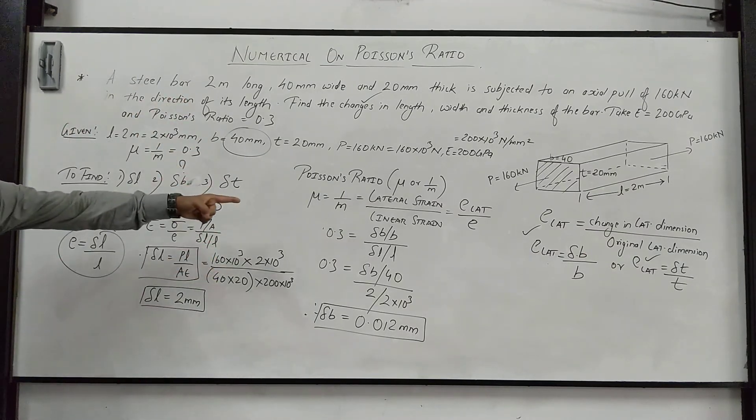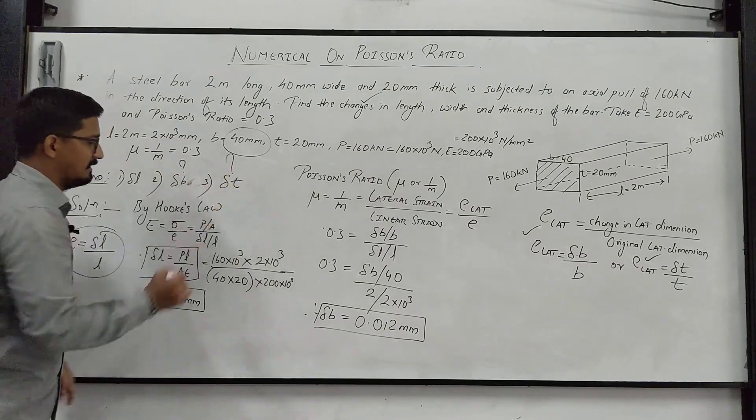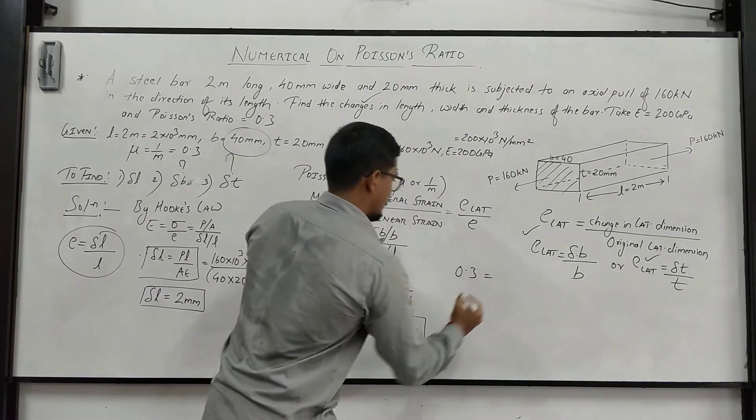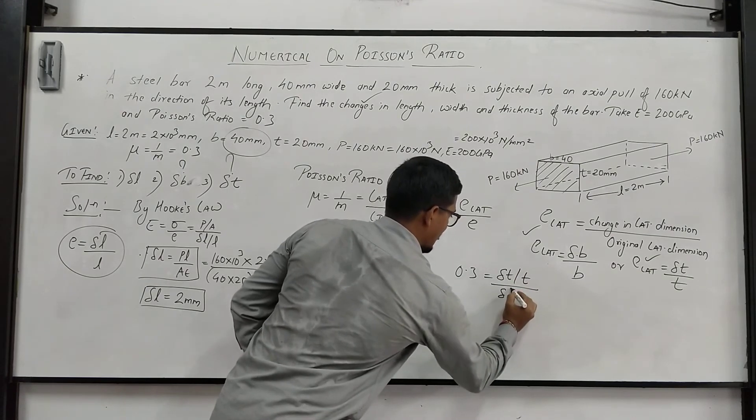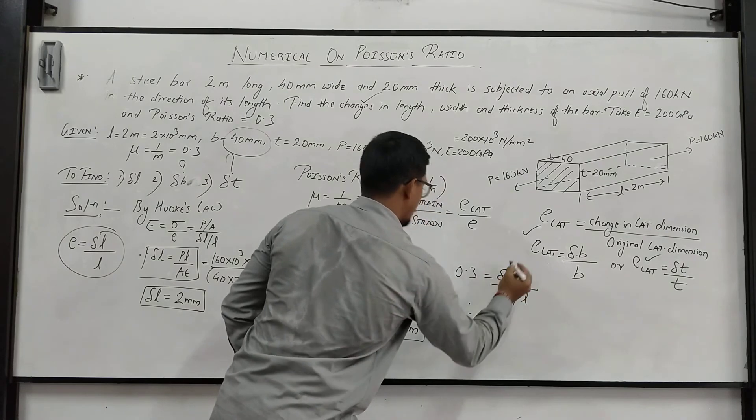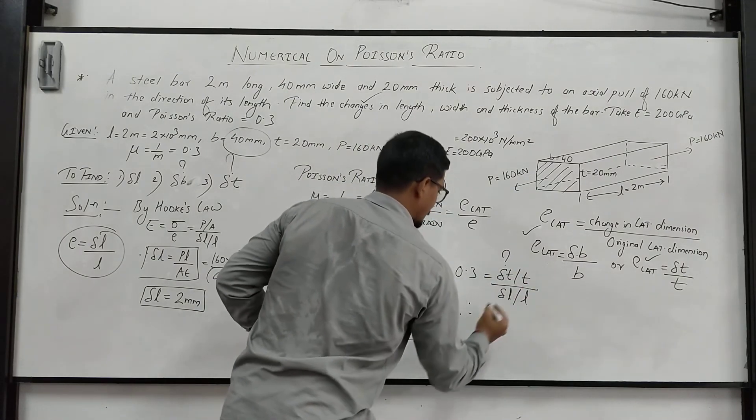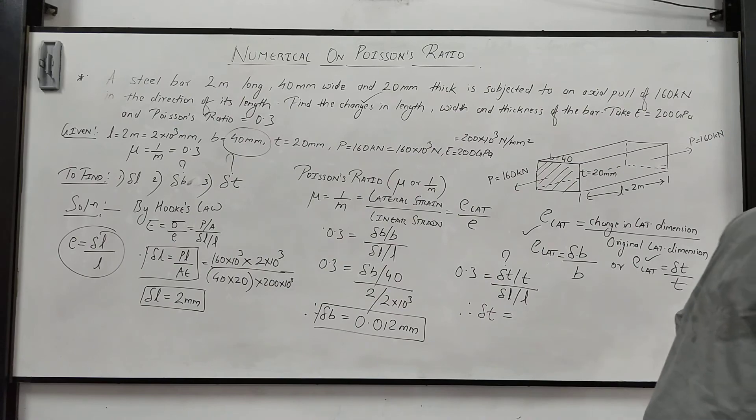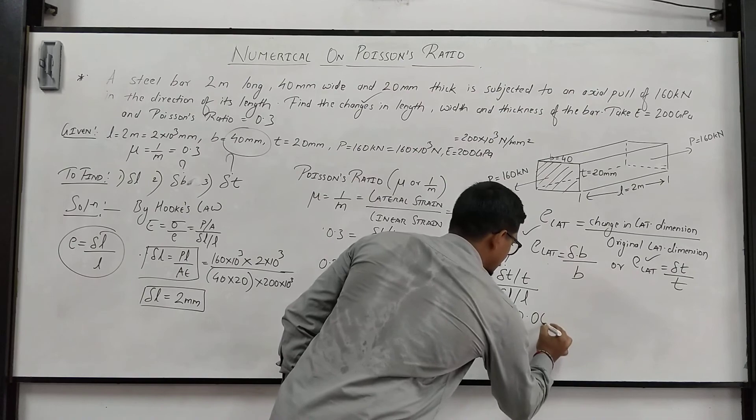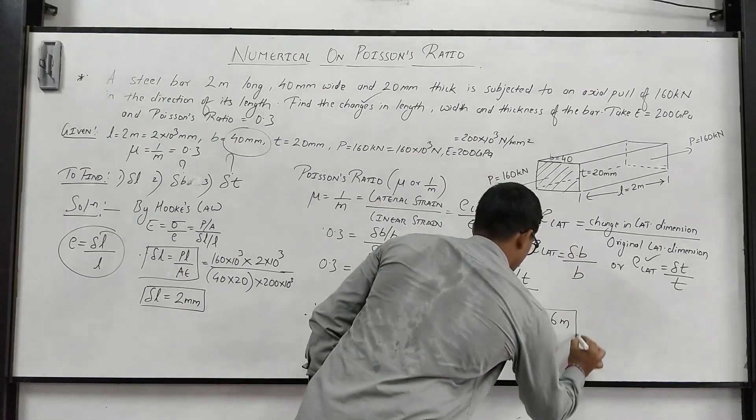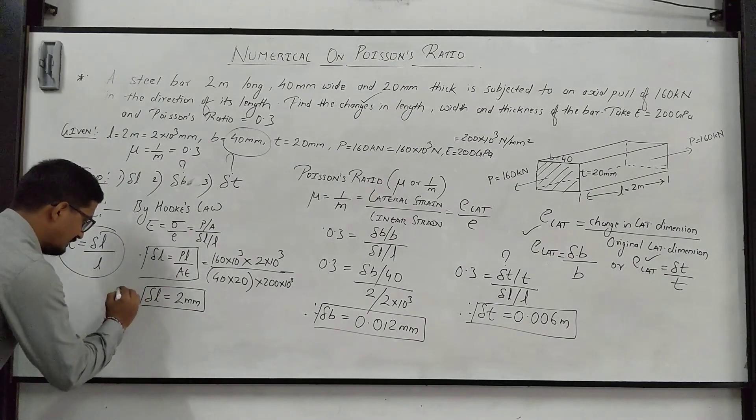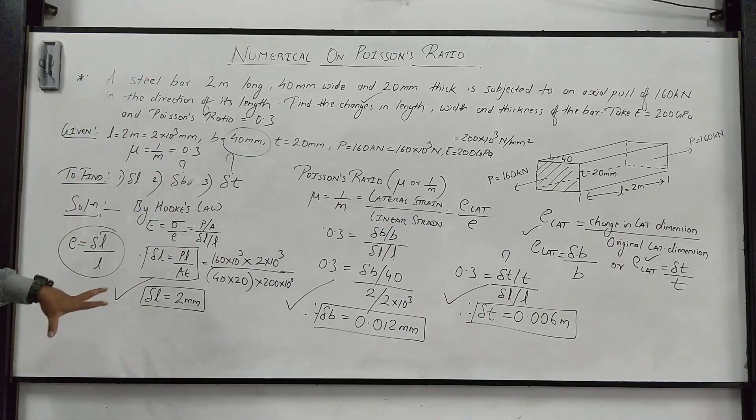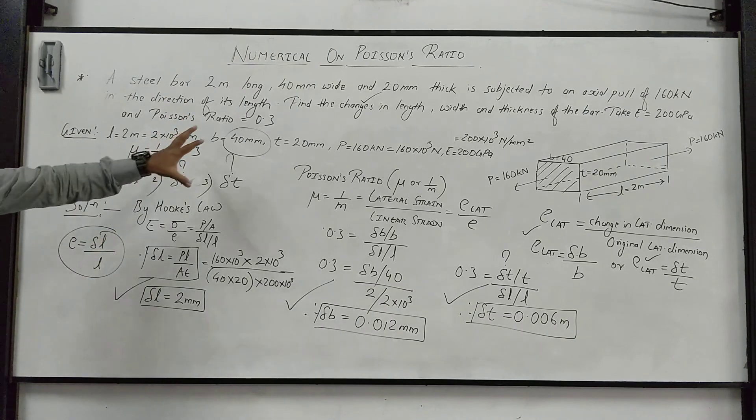Similarly, in the same fashion we can calculate for delta T also. 0.3 is the Poisson's ratio. We can write delta T by T upon delta L by L. Therefore this delta T we have to find, T is given, so everything is known. Therefore delta T is equal to 0.006 mm. So our change in length is complete, our change in width is complete, our change in thickness is complete. This is how we can solve a numerical on Poisson's ratio.